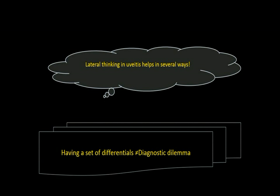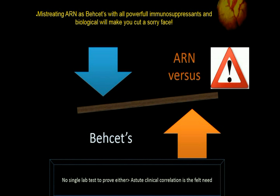Lateral thinking in uveitis pays rich dividends. The fact that you have differentials does not mean that you are unsure of the diagnosis. Mistreating acute retinal necrosis as Behçet's uveitis with all powerful immunosuppressants may make you cut a really sorry phase. Both are very close differentials with no single lab test that will prove either of them. Astute clinical correlation is a felt need to delineate them.